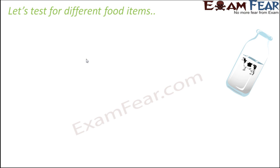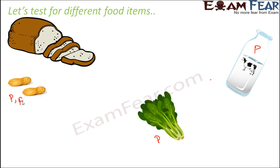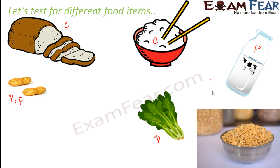When you perform all three tests for milk, you see that milk is a very rich source of proteins, so it gives a positive test for proteins. Spinach also contains protein, but in moderate amounts. Groundnuts contain proteins and also contain fats, because one food item can have multiple nutrients. Bread contains a lot of carbohydrates, giving a positive test for carbohydrates. Rice also gives a positive test for carbohydrates. Pulses give a very strongly positive test for proteins.